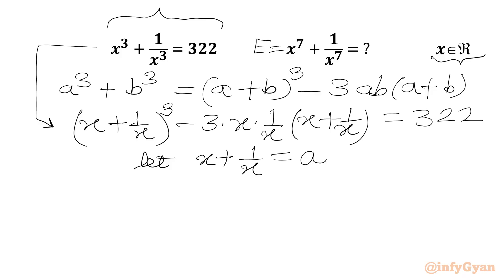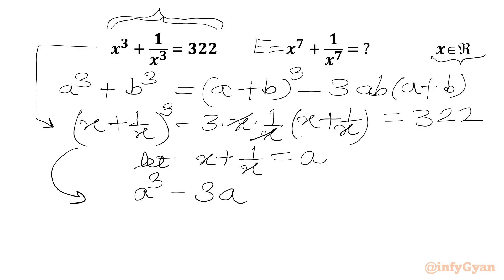Since x is a real number, a must be positive, and x must be positive. Our equation becomes a³ − 3a = 322.